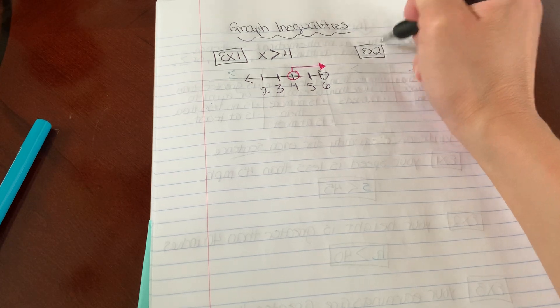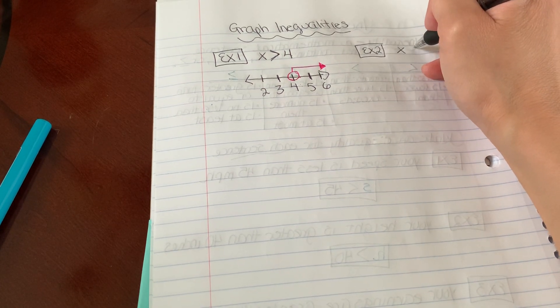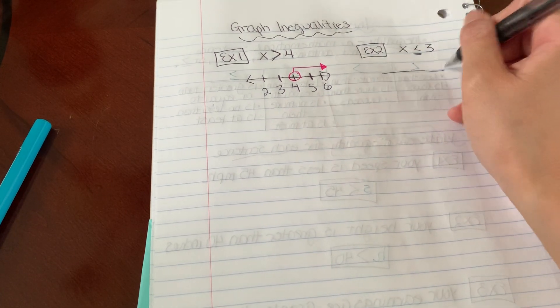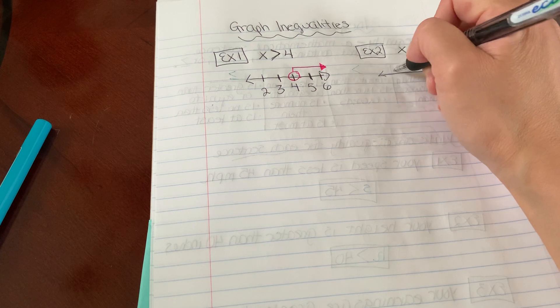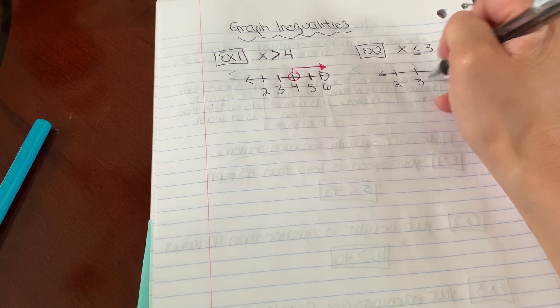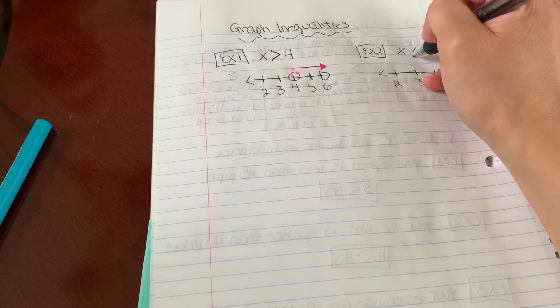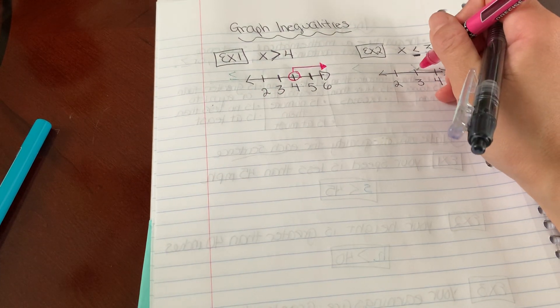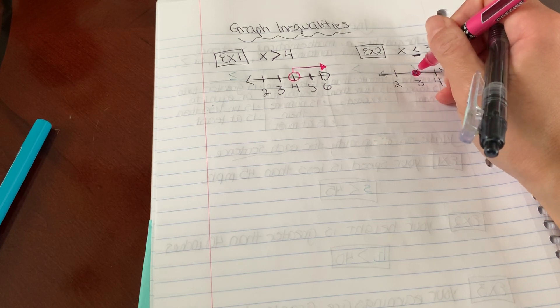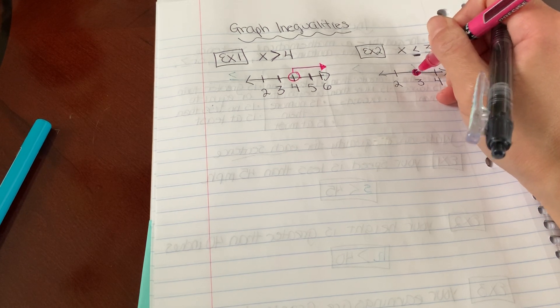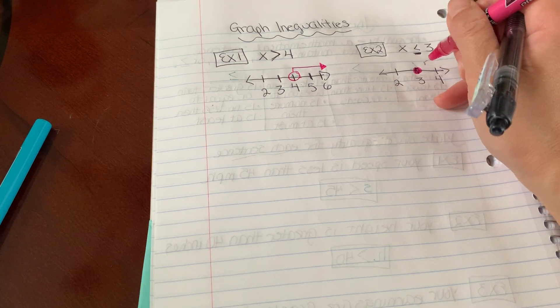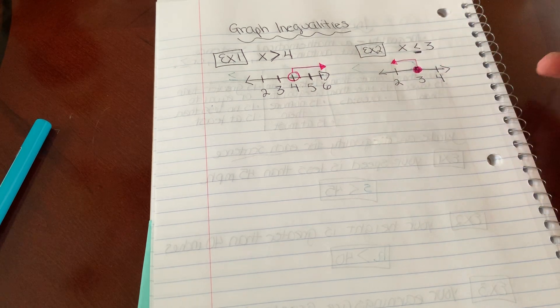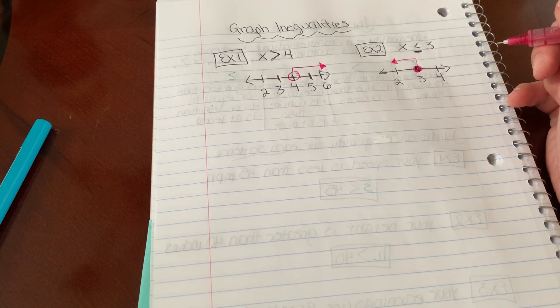So example two. If I have X is less than or equal to 3, I'm going to draw this here. Again, I'm going to evenly space out my numbers, 2, 3, and 4. Notice how I have an equal sign here. If I have a line underneath my inequality, I'm going to graph it with a closed circle. Meaning whatever value X is, it's going to include the 3. So I'm going to draw an arrow pointing towards all the numbers that are less than 3.